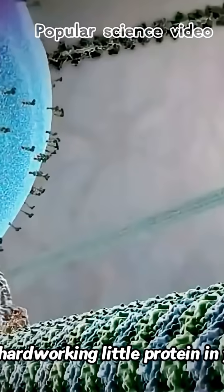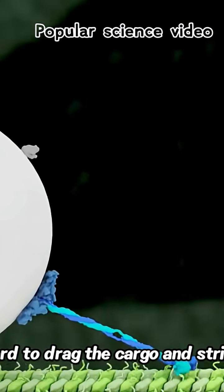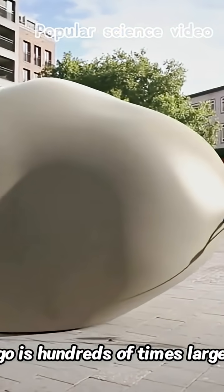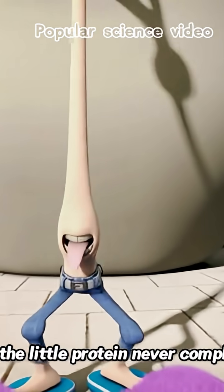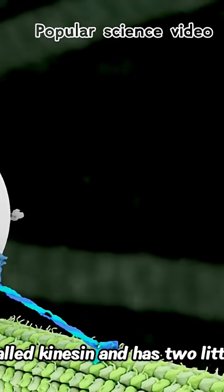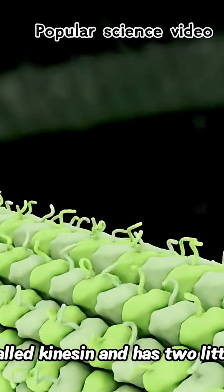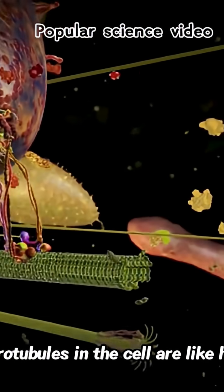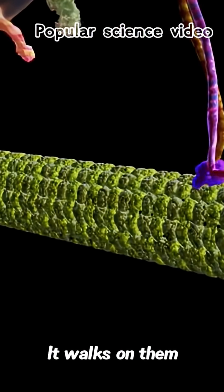This is a hard-working little protein in your body. It works hard to drag the cargo and stride forward. The cargo is hundreds of times larger than it, but the little protein never complains. It is called kinesin, has two little feet. The fan-shaped head can hold the cargo tightly.